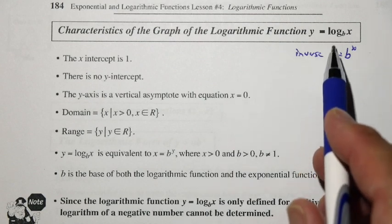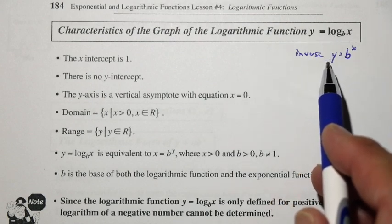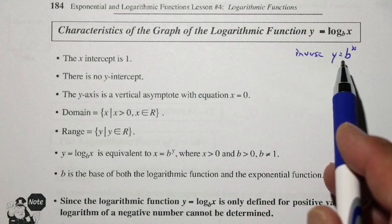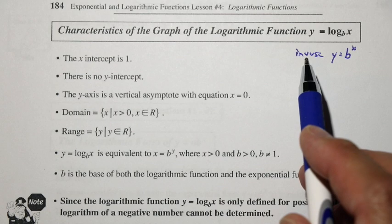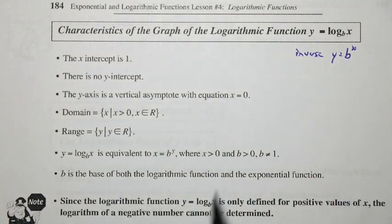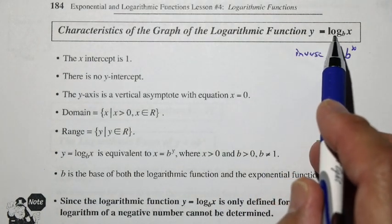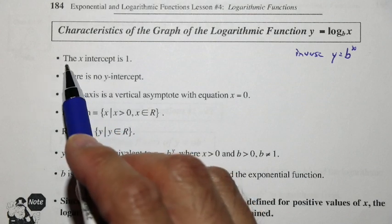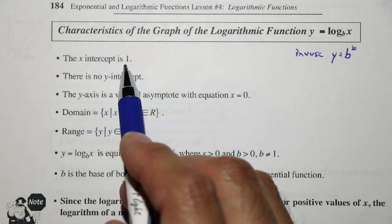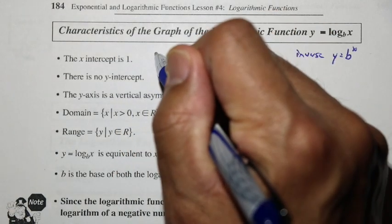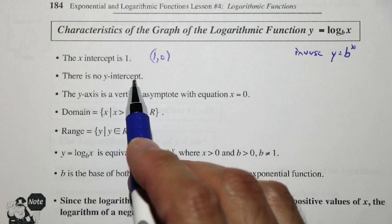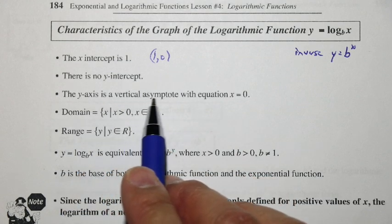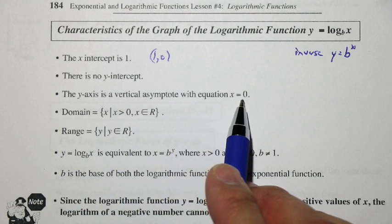As an inverse, if our mind thinks about exponential functions a little easier, we can think about that and then think about the inverse of that function. When we're talking about y equals log base b of x, the x-intercept of that log function is 1, so the x-intercept will be at (1, 0). There is no y-intercept. The y-axis is a vertical asymptote with the equation x equals 0.